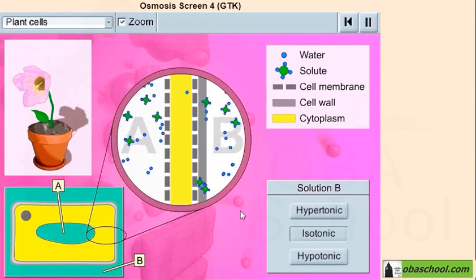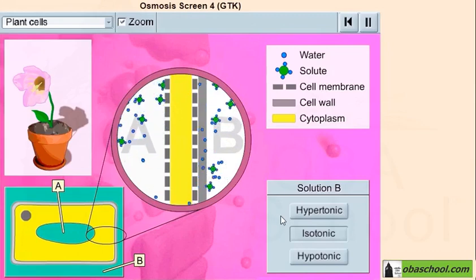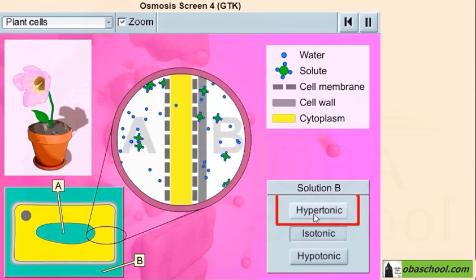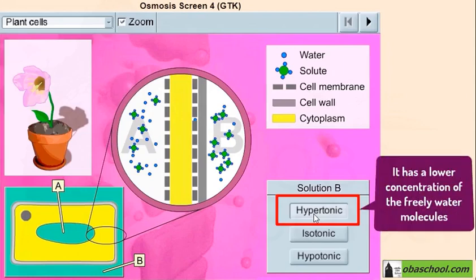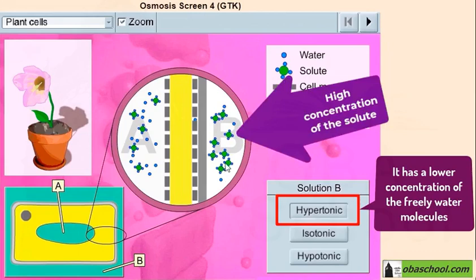Now let's consider that solution B is hypertonic. Usually a hypertonic solution has a lower concentration of the free water molecules. It will have a high concentration of the solute.